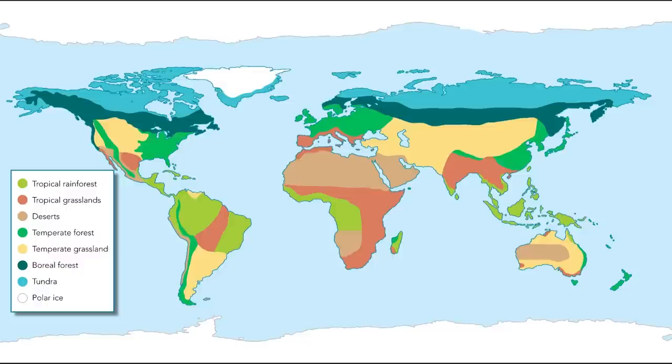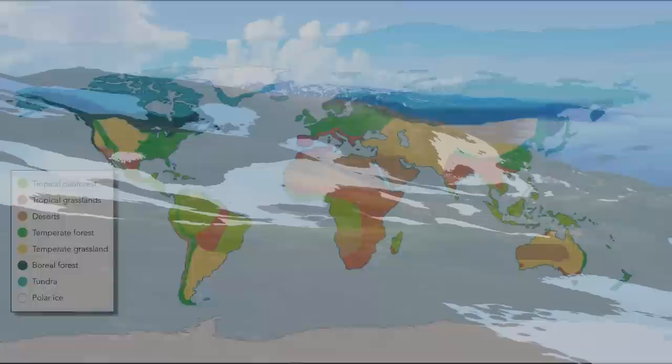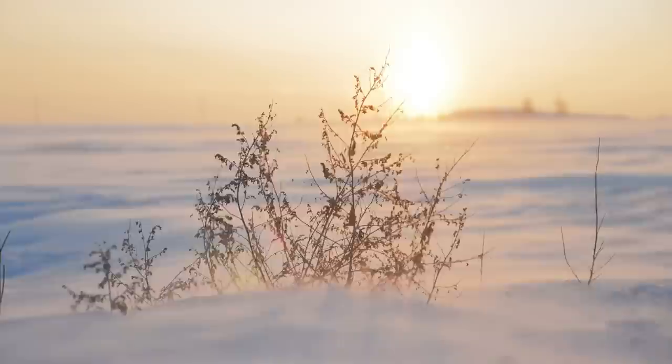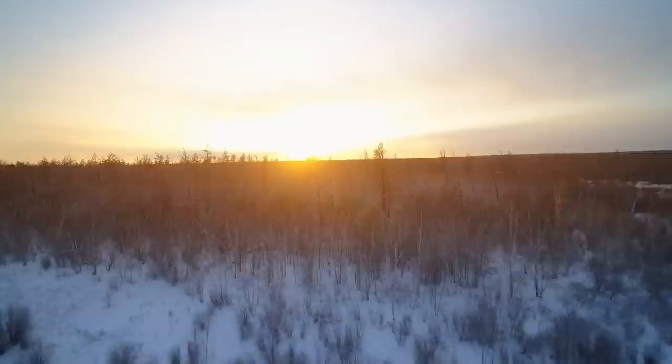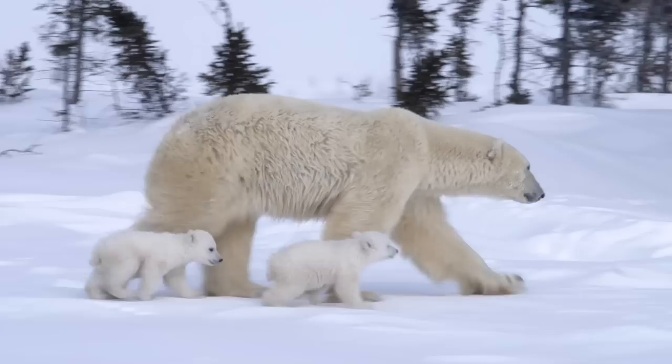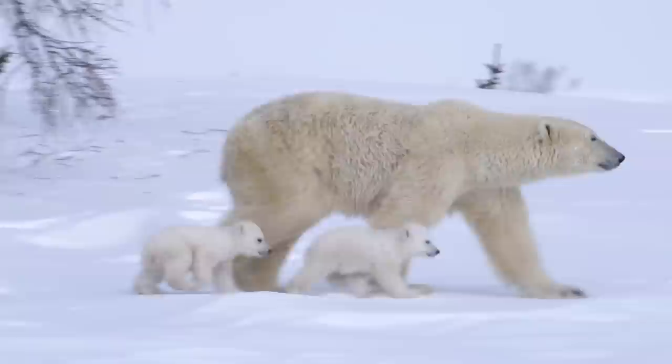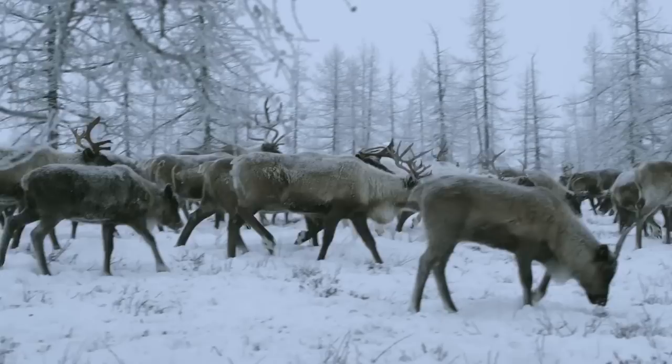Tundras are located between boreal forests and the Earth's North Pole. Characteristics of a tundra include very low temperatures year round, high winds, and few wild animals. Many animals are able to survive in a harsh tundra environment. Those that can are generally large mammals like polar bears, musk ox, and reindeer.